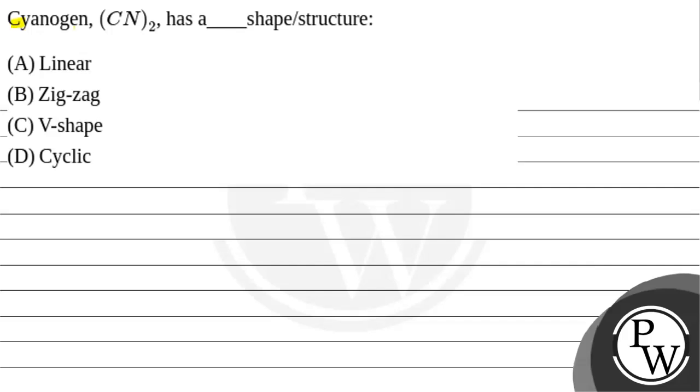Hello everyone, let's treat this question. Cyanogen, (CN)₂, has a what shape or structure? A: linear, B: zigzag, C: V-shape, or D: cyclic. So we will talk about this.